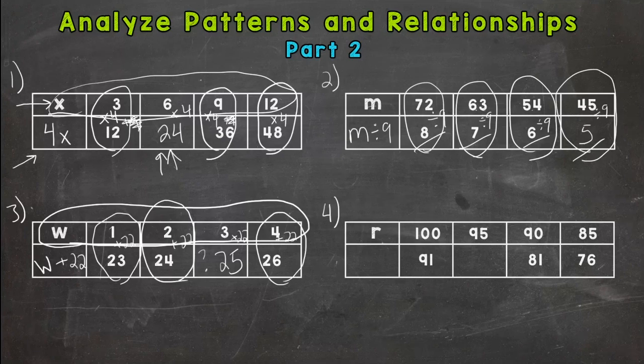Alright. And then number 4. 100, 95, 90, 85. Looks like we're counting down by 5. And we have 100 to equal 91. So we're decreasing in value. So it's going to be subtraction or division. And this one's actually going to be subtraction. We're subtracting 9.